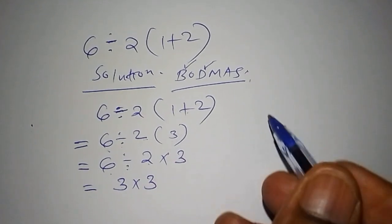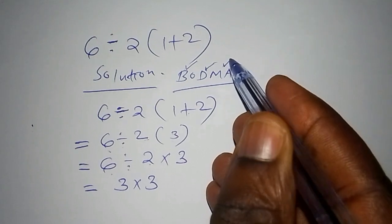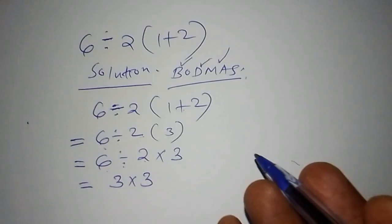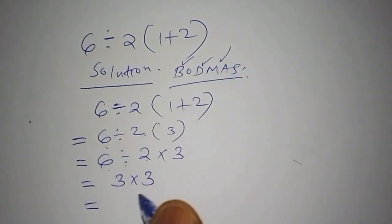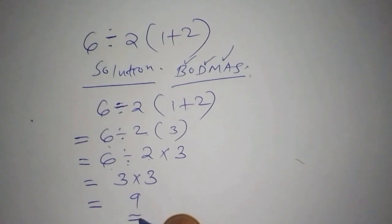So next, now we shall move to the multiplication, which is the last bit. And that one when we pick now, 3 multiplied by 3, and our final answer shall be 9.